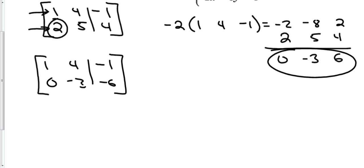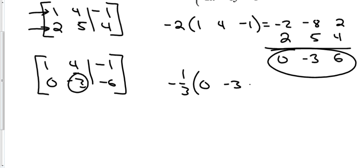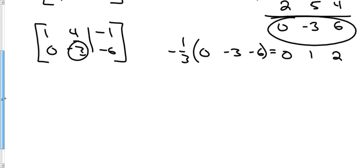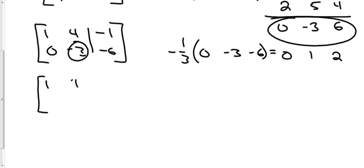Next, turn the negative three into a one by multiplying the entire second row by negative one-third. Zero times negative one-third stays zero; negative three times negative one-third is positive one; negative six times negative one-third is positive two. So the new second row is zero, one, two — but wait, there's a correction needed.